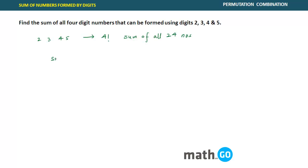The formula says sum of digits, which is here 2 plus 3 plus 4 plus 5. Then it says n2 multiplied by n minus 1 factorial. So n minus 1 factorial, n is how many terms are there, letters are there or digits are there? 4. So it becomes 3 factorial, into 10 raised to power n minus 1 by 10 minus 1.